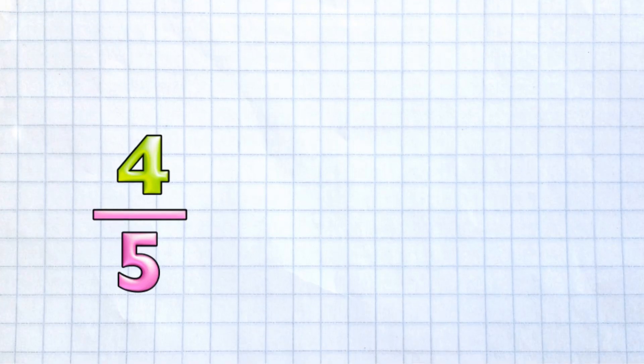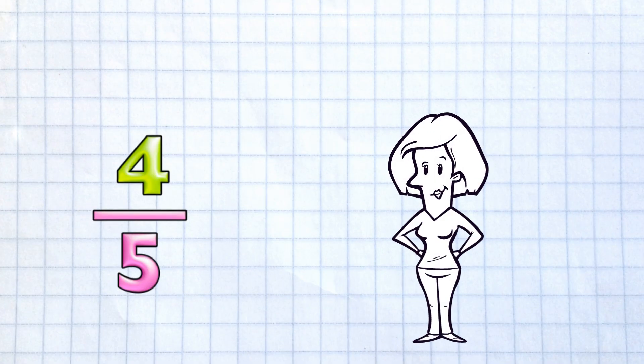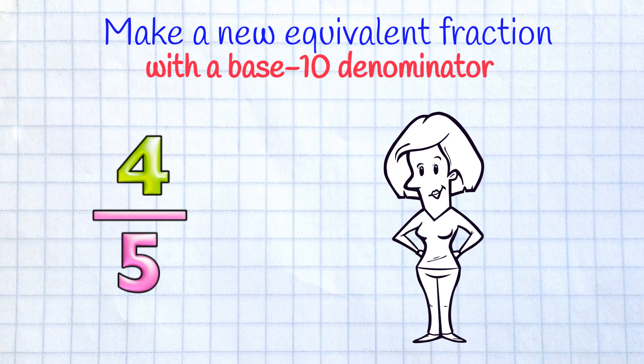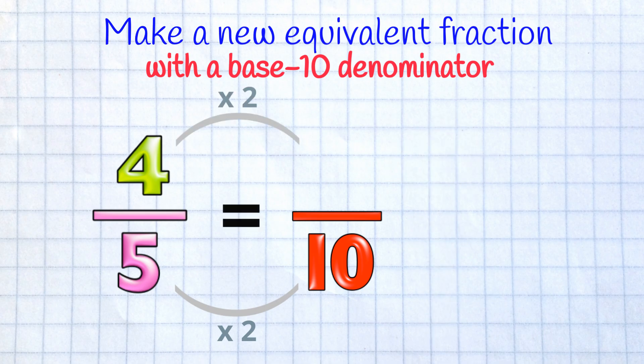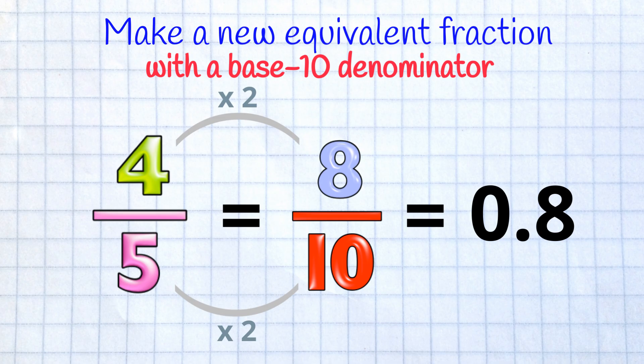Let's try it! 4 fifths. We have a denominator of 5. We can turn that into a denominator of 10. We just multiply by 2, and we do the same up top to make our equivalent fraction: 8 tenths. And of course, as a decimal, that's 0.8! Not hard at all!